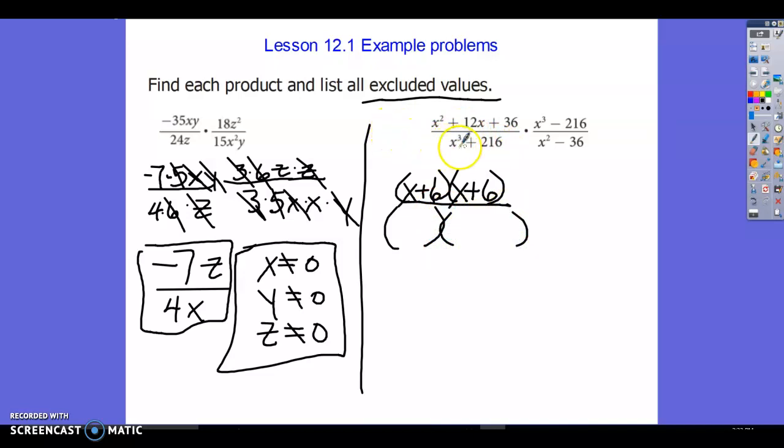b would be 6 because 6 cubed is 216. And it doesn't hurt to know a few of your perfect cubes. I don't know a lot of them, but the first few for sure you should recognize.